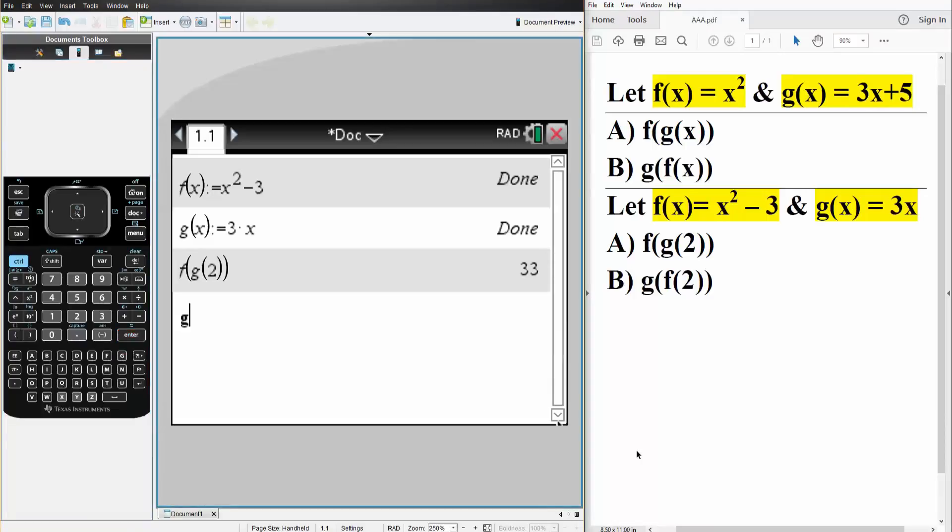Last one, g parentheses f parentheses 2. And so it looks identical, right? Hit enter. The answer is 3. And that's all we need to do to determine composite functions using the ti inspire.